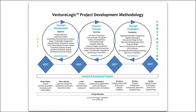You have to put forth the effort, resources, or money to even get past the first circle, which is the concept development stage. Below the decision diamonds is our content and contextual factors area, which covers all the different areas you would look at over the project development life cycle. At the bottom, 'comprehension' simply means all of those elements have to come together in a single business model that is viable — first economically, then socially, technically, and environmentally.